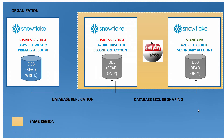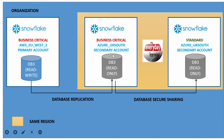Before we go into the demo, I would like to share the architecture I am going to implement. Here you can see this is an organization and within the organization I have three different accounts, out of which two are Business Critical and one is Standard. Both Business Critical accounts are on two different regions — one is primary and one is secondary. I am going to replicate the data between the Business Critical accounts from Europe West to Azure UK South.